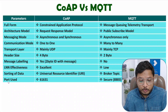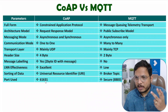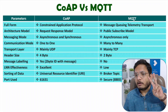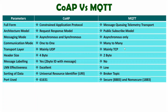The next parameter is the port used. With CoAP protocol, the port is 61631. With MQTT protocol, there are two possibilities — secured and non-secured connection. With a secured connection, the port number is 8883, and with a non-secured connection, the port number is 1883. So secure MQTT uses port 8883 and non-secure MQTT uses port 1883.